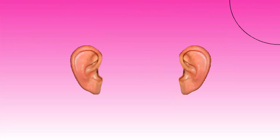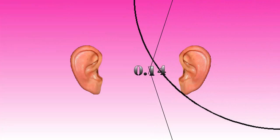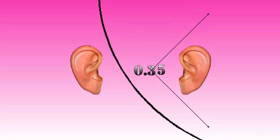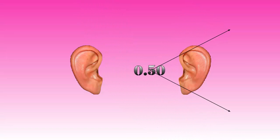Since the sound arrives first at the right ear, our brain knows the sound came from the right. And since the difference was 0.50 milliseconds, our brain knows the angle.